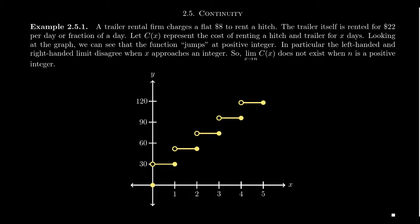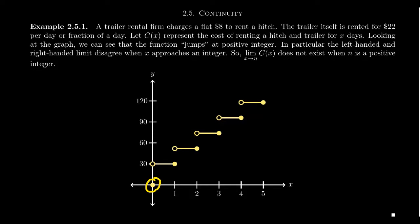Imagine the following scenario: we have a trailer rental firm that charges a flat $8 fee to rent a hitch, and then the trailer itself is rented for $22 a day. This counts for any fraction of the day — so if you rent the trailer for just an hour and return it that same day, they'd still charge you the whole day at $22. Let C(x) be the cost function for renting a hitch and trailer for x number of days. Negative days wouldn't make sense, so negatives are outside the domain. Any non-negative number would make sense, including fractions, decimals, and irrational numbers.